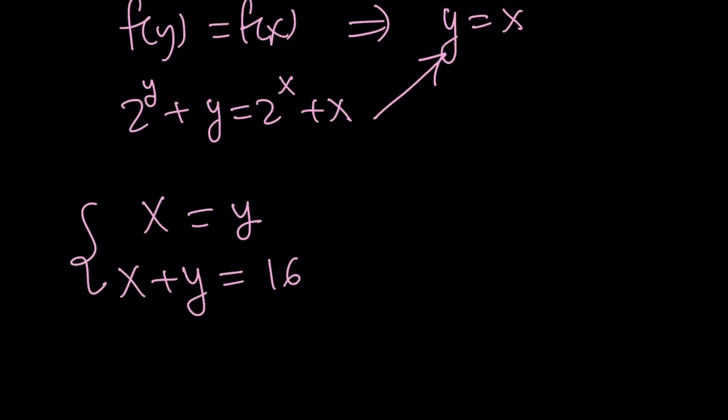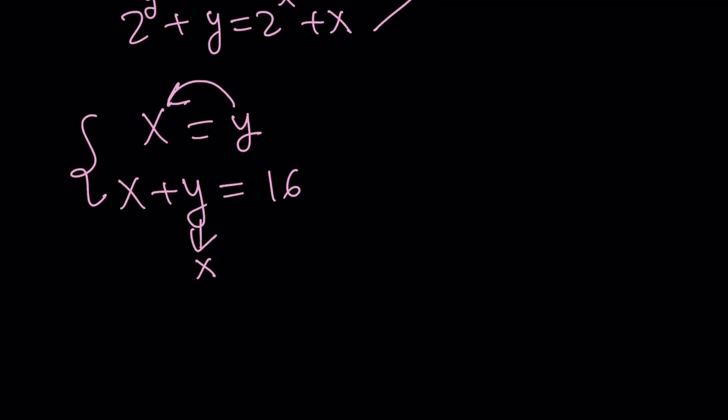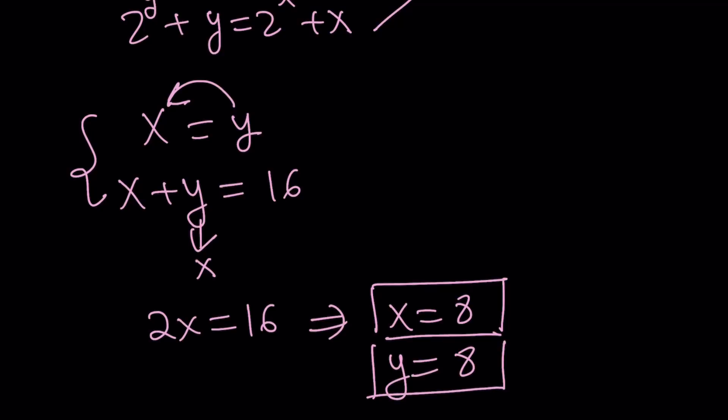Now we have a much simpler system. And how do you solve it? Easy. Just replace y with x or x with y and you're going to get the answer. If you replace y with x, this is substitution by the way, x plus x becomes 16, which means 2x is equal to 16. And then from here you get x equals 8. Awesome. And since x and y are equal, this implies y equals 8. So the solution is going to be 8, 8 if you want to write it as an ordered pair.